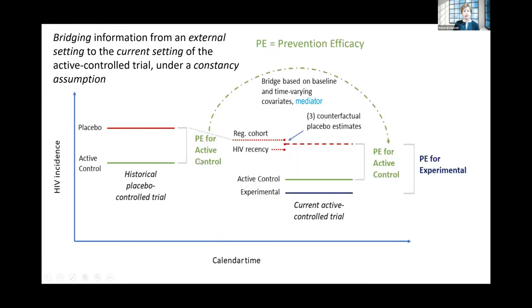Courtesy of Holly, I'll walk you through this diagram that tries to put all these concepts together. On the left-hand side is what we currently have — historical placebo-controlled trials that have shown efficacy. The y-axis shows HIV incidence rate; the placebo incidence rate was higher than the active control, and we had effective prevention efficacy. On the right-hand side, we have an active control trial where the active control from the historical is present and we're adding an experimental intervention to evaluate its efficacy in preventing HIV.